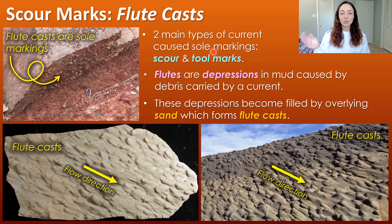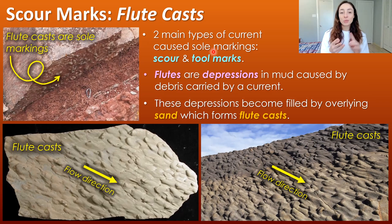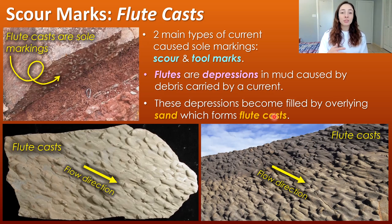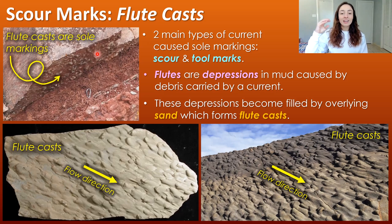Starting with sole markings — those preserved on the underside of bedding planes — there are two main types caused by currents: scour marks and tool marks. Flutes or flute casts are a type of scour mark. Flutes are depressions in mud caused by debris carried by a current, and these depressions become filled by overlying sand, forming flute casts. The mud weathers away, and what is preserved is the filling or cast. That's what a cast is — a filling. That is why they are called sole markings: they're on the bottom of a sandy bed that overlaid the mud with the depressions. When preserved on this underside, they look like bumps rather than depressions because they're casts — they're filled.